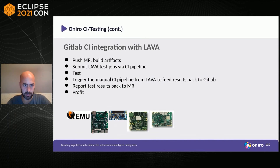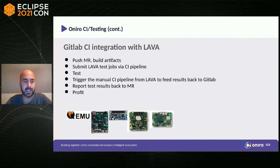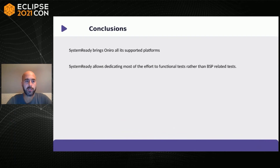In summary: developers push merge requests, GitLab builds artifacts, we submit a LAVA job via the CI pipeline, run the tests, trigger the manual CI pipeline from LAVA to feed results back to GitLab, and report those test results back to the merge requests. The supported devices include Seco boards, Arduino, Raspberry Pi, and Nitrogen.